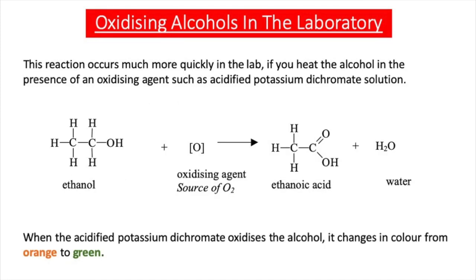If you want to oxidize an alcohol to a carboxylic acid in the laboratory, you need an oxidizing agent — a substance that causes another substance to gain oxygen or lose hydrogen. An example is acidified potassium dichromate. If you heat ethanol with acidified potassium dichromate, the ethanol oxidizes to ethanoic acid, and the acidified potassium dichromate changes from orange to green. Acidified potassium dichromate was used in breathalyzer tests: if you breathed on the orange crystals and they changed to green, that proved there was alcohol in your breath.